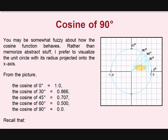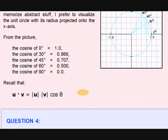The cosine of 45 degree is 0.707. Cosine of 60 degree equals 0.5. Cos 90 degree equals 0. So this is the way you see the cosine in a circular projection. We recall that U dot V equals modulus U modulus V cos theta.